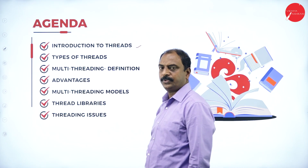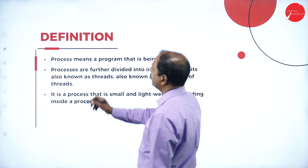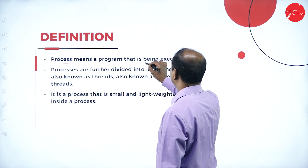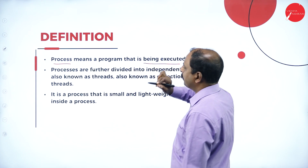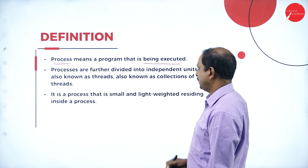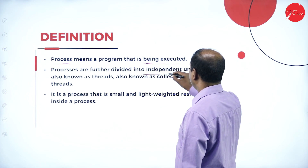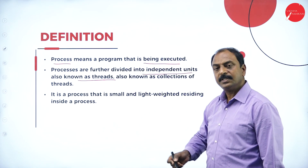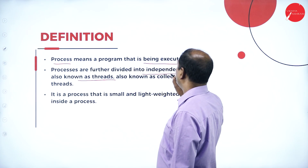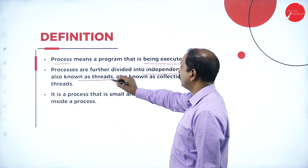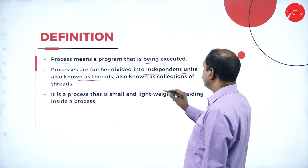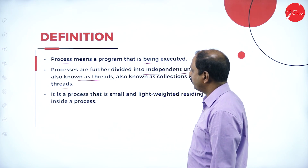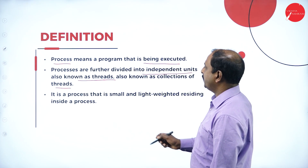Let us start with the definition of what is a process. A process means a program that is being executed, so the program in execution is called a process. Processes are further divided into independent units also known as threads. Each process can be subdivided into a number of threads — they are independent units, and a process is also known as a collection of threads.